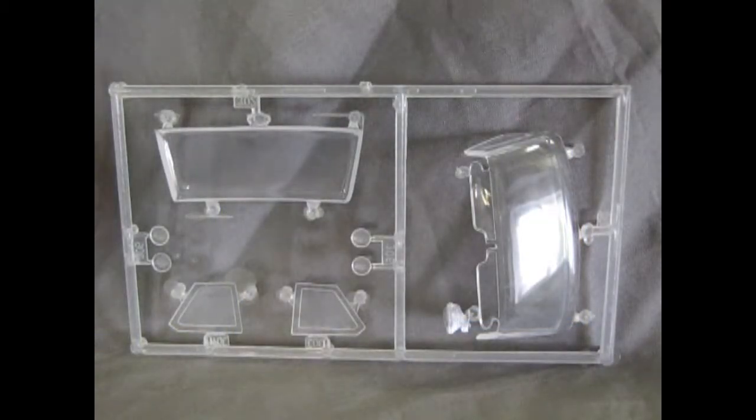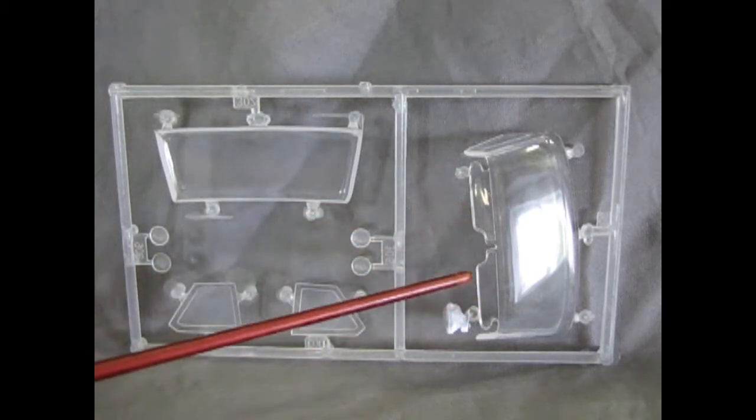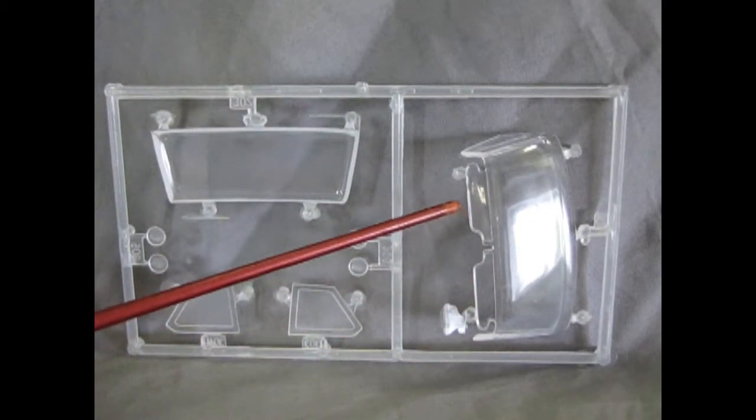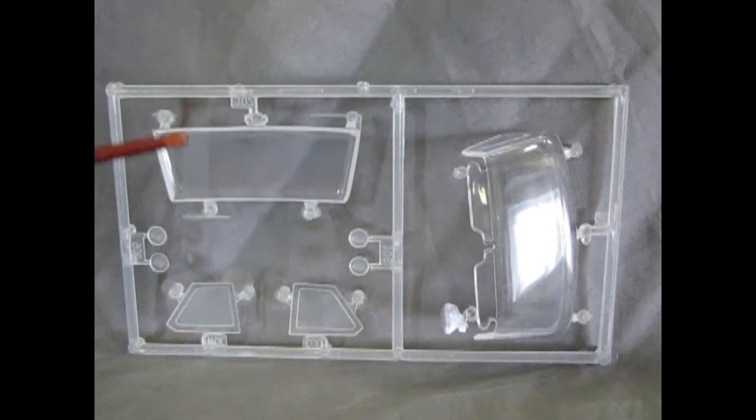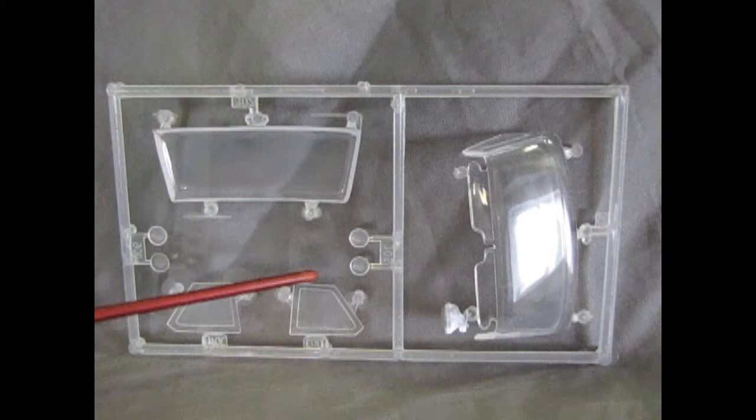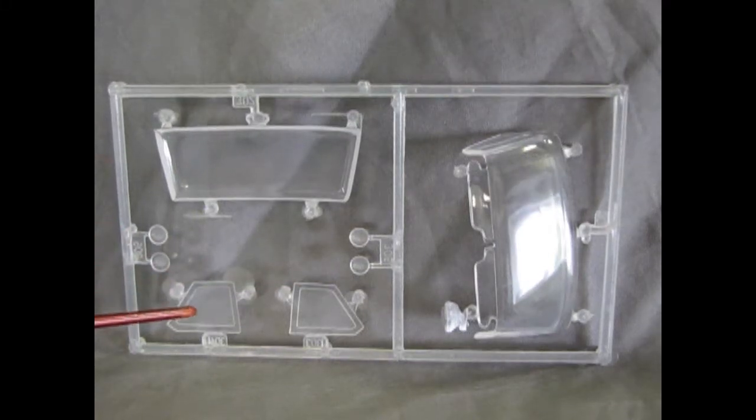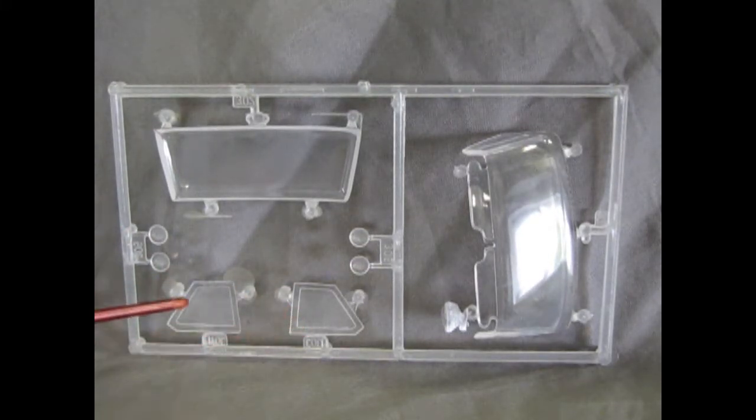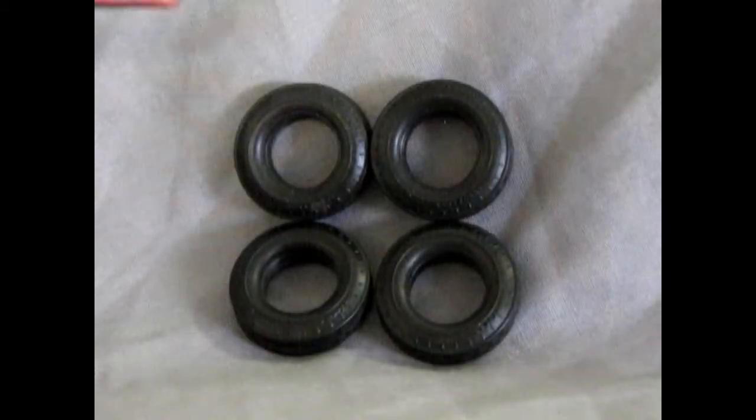Now, here we have the windshield and glass components. So there's the front windshield there. And it does have the sun visors molded in at the top. So that's nice. The rear window is, of course, pretty flat looking. There's our front headlights. And these are the rear windows on the sides of the car.